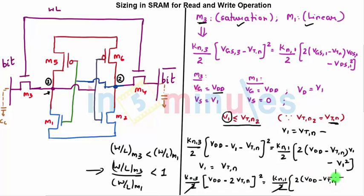Twice Vdd minus Vtn into Vtn minus Vtn square. So I've got, so from this equation I can easily write the following: kn3 by kn1 is equal to twice Vdd minus Vtn into Vtn minus Vtn square upon Vdd minus twice Vtn the whole square.